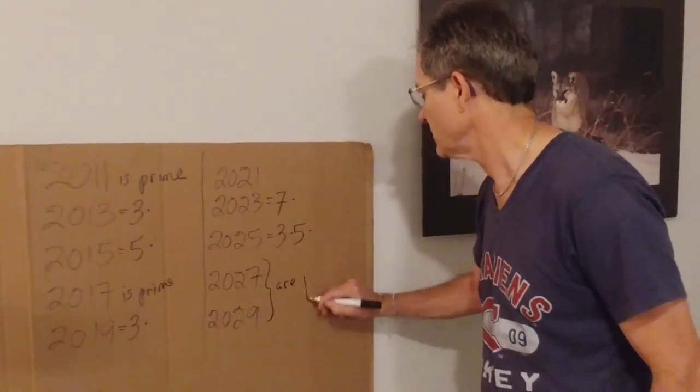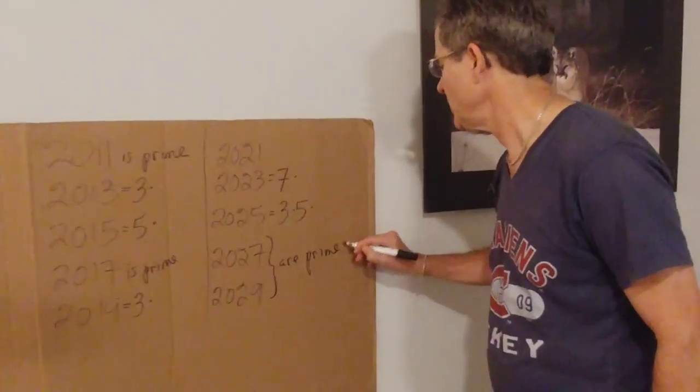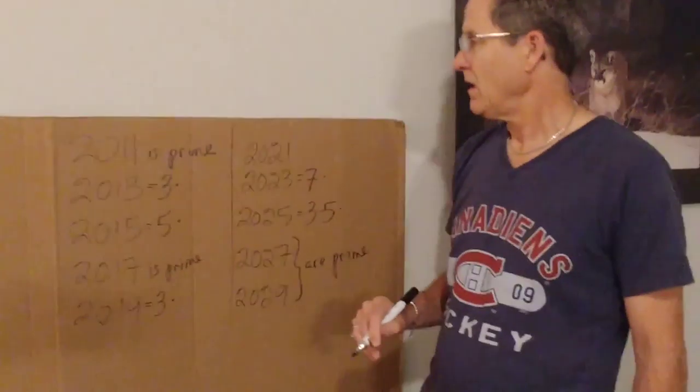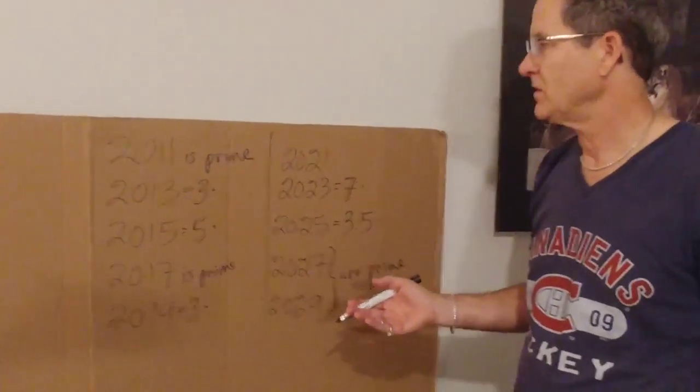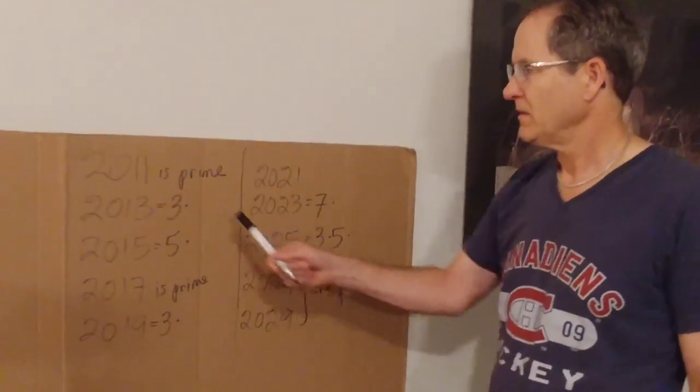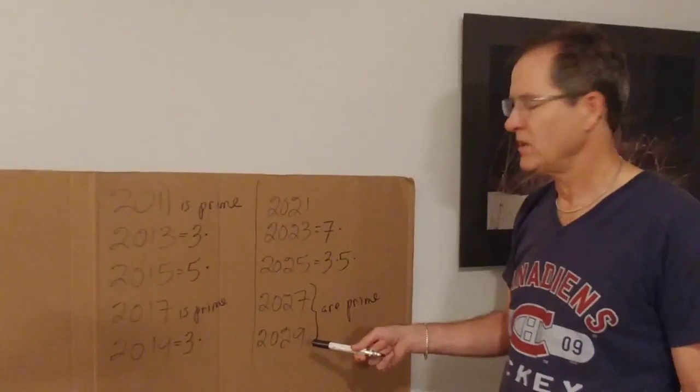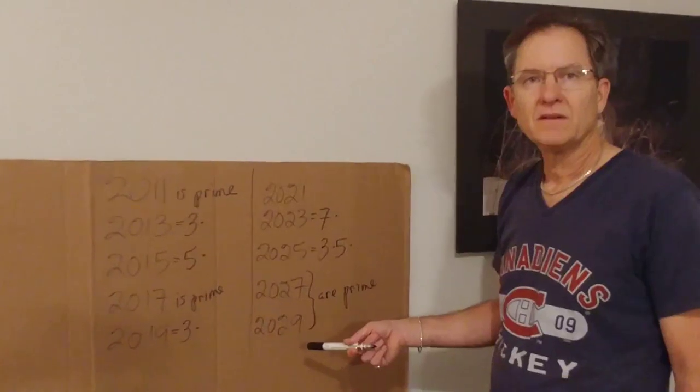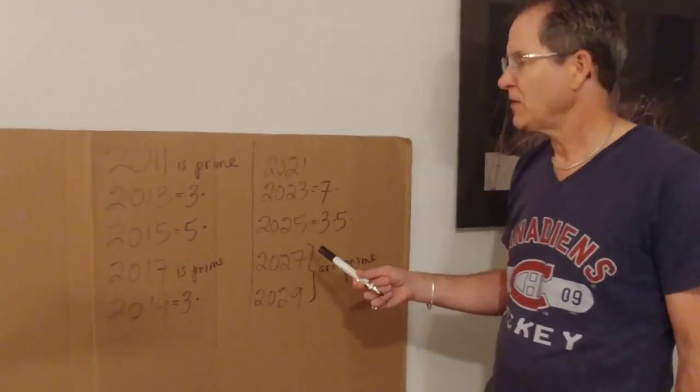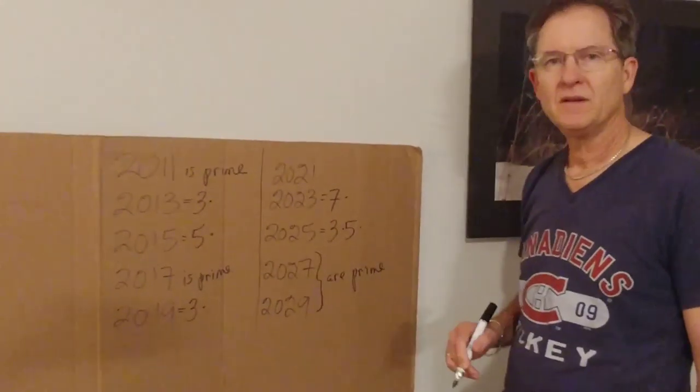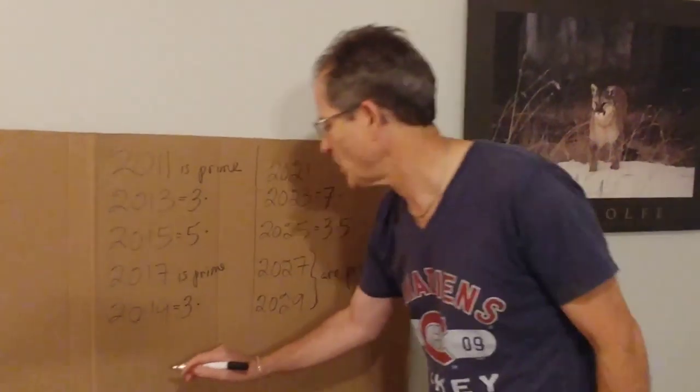When you do that, how big do you have to go to divide before you know that you've gone far enough? That's an interesting question. Some people think it's half the number, but actually if you just go up to the square root of the number, you've gone far enough.